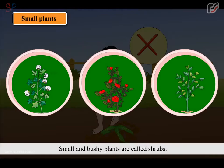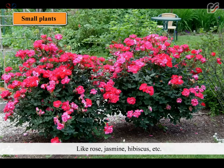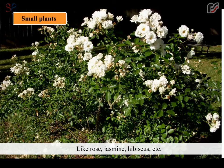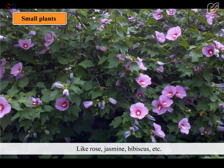Small and bushy plants are called shrubs. They are bigger than herbs and have stems of wood. Like rose, jasmine, hibiscus etc.